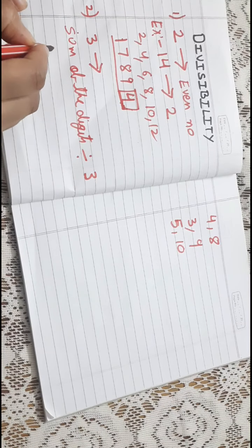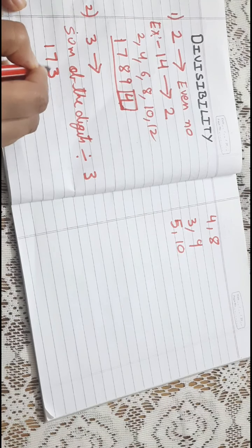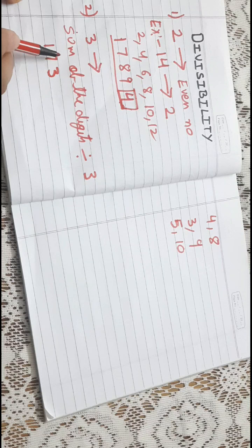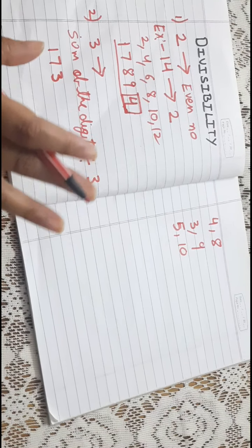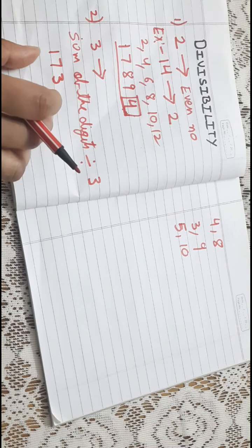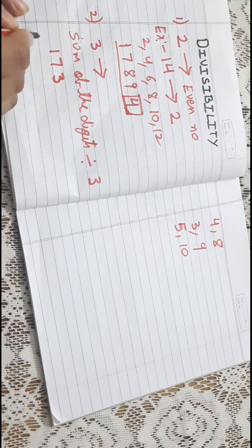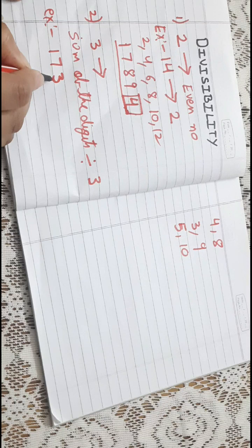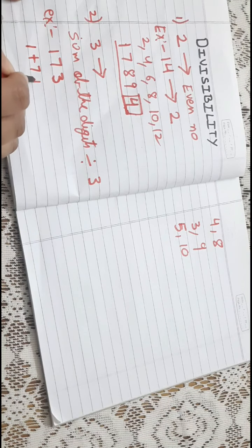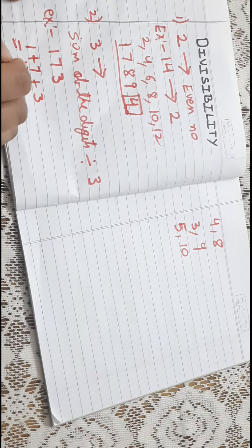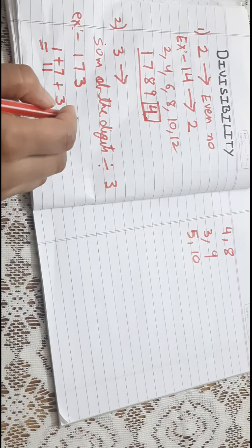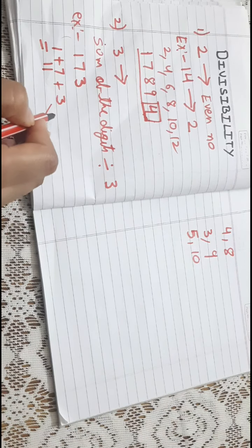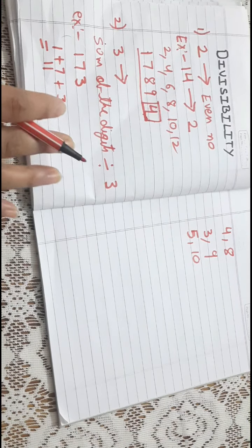For example, maine liya hai number 173. Ab 173 ki divisibility check karni hai ki yeh three se divide hota hai ki nahi. Check karne ke liye hum kya karenge — jo bhi number hai unki digits ko add kar denge, unka sum nikalenge. Sabse pehle: 1 plus 7 plus 3 equals 11. Now, is 11 divisible by 3? No, 11 is not divisible by 3, isliye yeh poora number bhi 3 se divide nahi hoga.